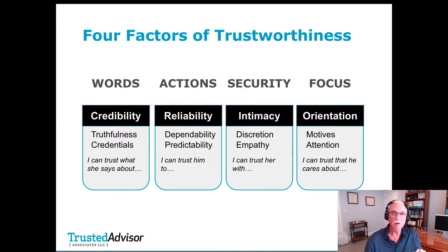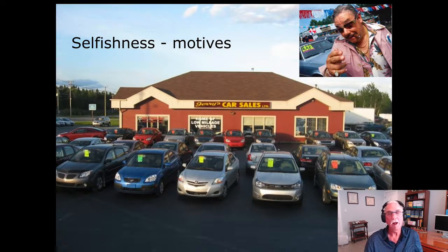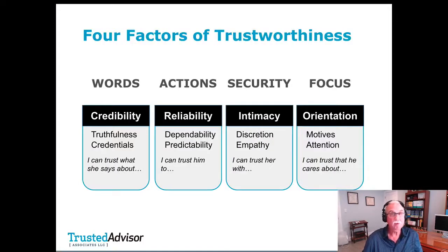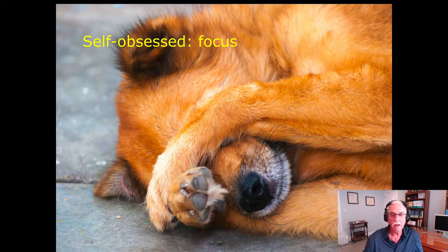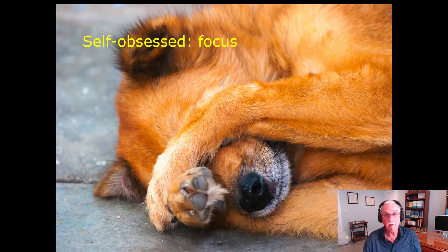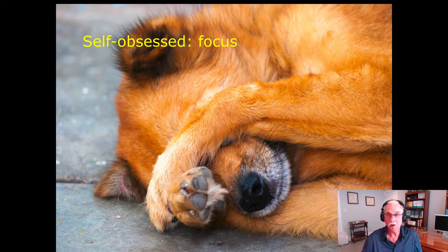There are two flavors of self-orientation. The first is selfishness — the classic image of the used car dealer. That's not hard to spot. The trickier, more relevant one is self-obsession: worrying all the time — 'How are they going to like me? Am I going to get the sale? What are they thinking about me?' That is an occupational hazard for nearly everybody in consultative or advisory roles, and that's a real big deal.